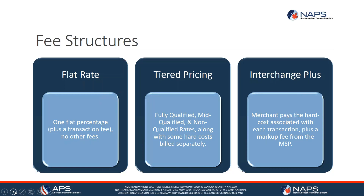In the US, there's something called a regulated debit card. The regulated debit card hard cost is 0.05%. Meaning if your processor charges you half a percent on this transaction, they would be earning 0.45% because the hard cost is only 0.05%. Where if you're on a tiered structure and the best rate they offer is 2%, now they're earning nearly 2% in profit on some transactions — which, depending on your credit card volume, could be a very high amount of profitability built into your merchant account for your processor.